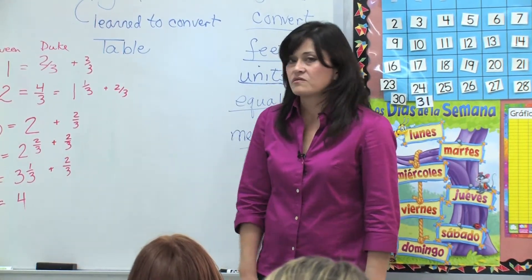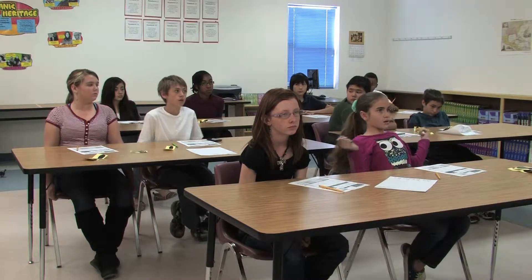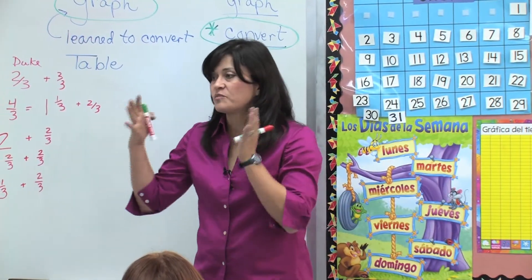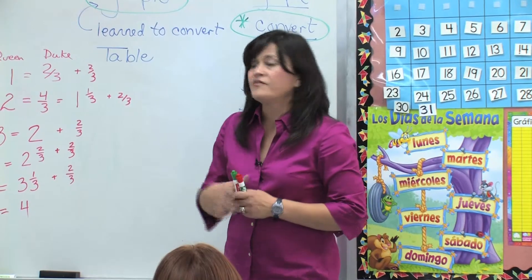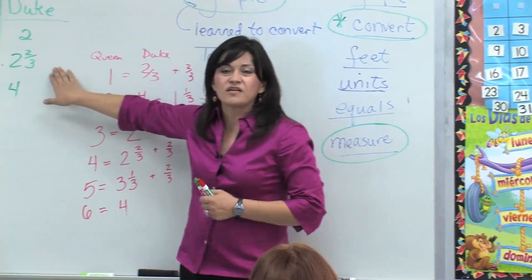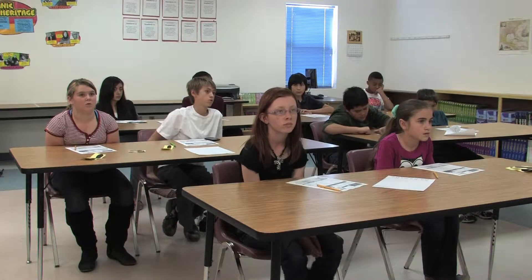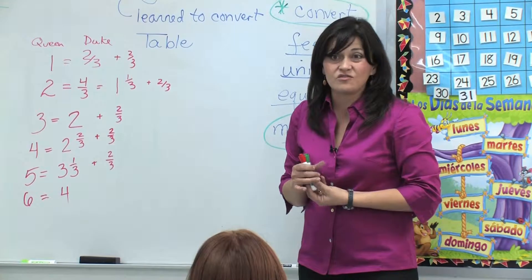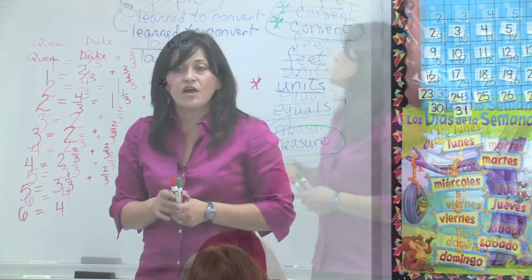What did you learn today from the Queentopia and Kingtopia video? What were some of the important key concepts? One of the key concepts was to teach the people how to convert. How to use a graph. How to measure. What occupations is measurement vitally important in — where they have to be exact? Architecture. Can you imagine if they were even a little bit off? Also when you're piloting a plane — if you're a little bit off, that could cost you your life and lots of other people their lives too. So measurement is really, really important.